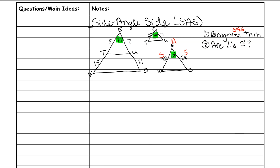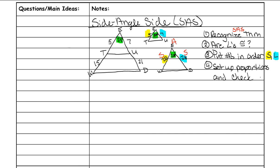The third thing we want to do is put your side lengths in order. My smallest side on the top triangle is 5, and on the bottom one is 20. My largest side for the small triangle is 7, and for the big one is 28. Then set up your proportions: 20 over 5 equals 28 over 7? 20 divided by 5 is 4, and 28 divided by 7 is 4. They both work out, so it is side-angle-side.